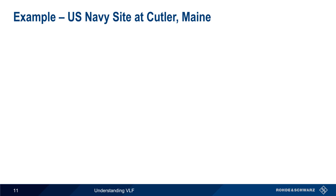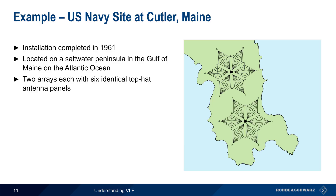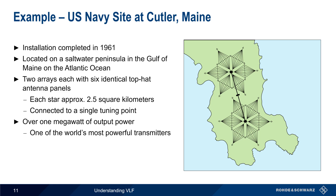A good example of a VLF transmit site is one operated by the United States Navy near Cutler, Maine. This site was completed in 1961 and is located on a saltwater peninsula in the Gulf of Maine. The site has two arrays, each with six identical top hat-style antenna panels in a star configuration, each occupying an area of approximately 2.5 square kilometers. These antennas are both connected to a single tuning point. The system can be operated with an output power of over 1 megawatt, making it one of the most powerful transmitters in the world. This site also possesses a very elaborate ground system composed of thousands of kilometers of buried radials.